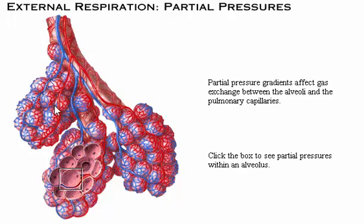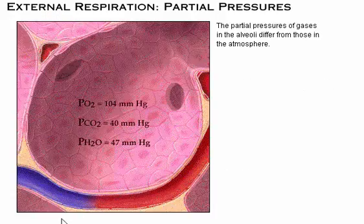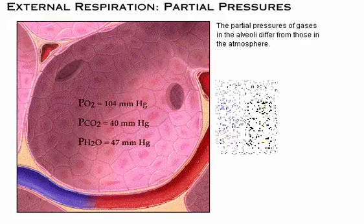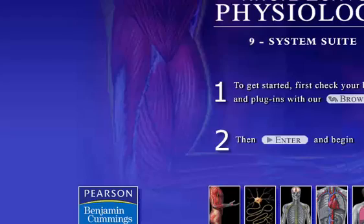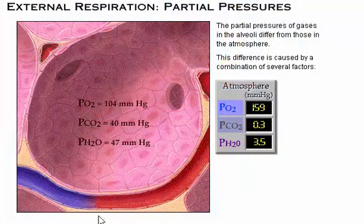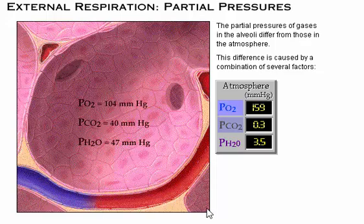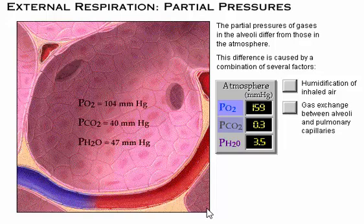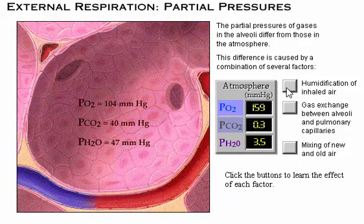Click the box to see partial pressures within an alveolus. Notice that the partial pressures in the alveoli differ from those in the atmosphere. This difference is caused by a combination of several factors: humidification of inhaled air, gas exchange between the alveoli and pulmonary capillaries, and mixing of new and old air. Click the buttons to learn the effect of each factor.